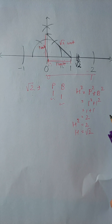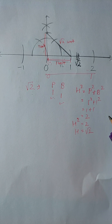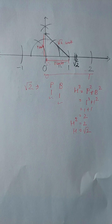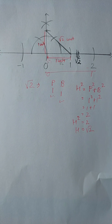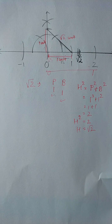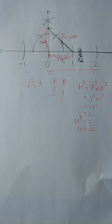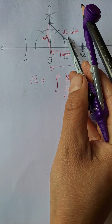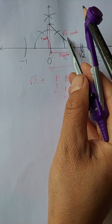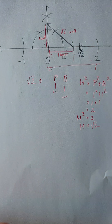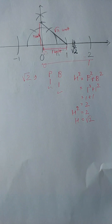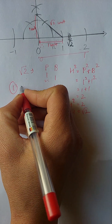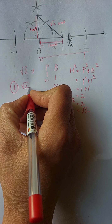The hypotenuse is going to be root two units. This is your first task — locating root two on the number line.